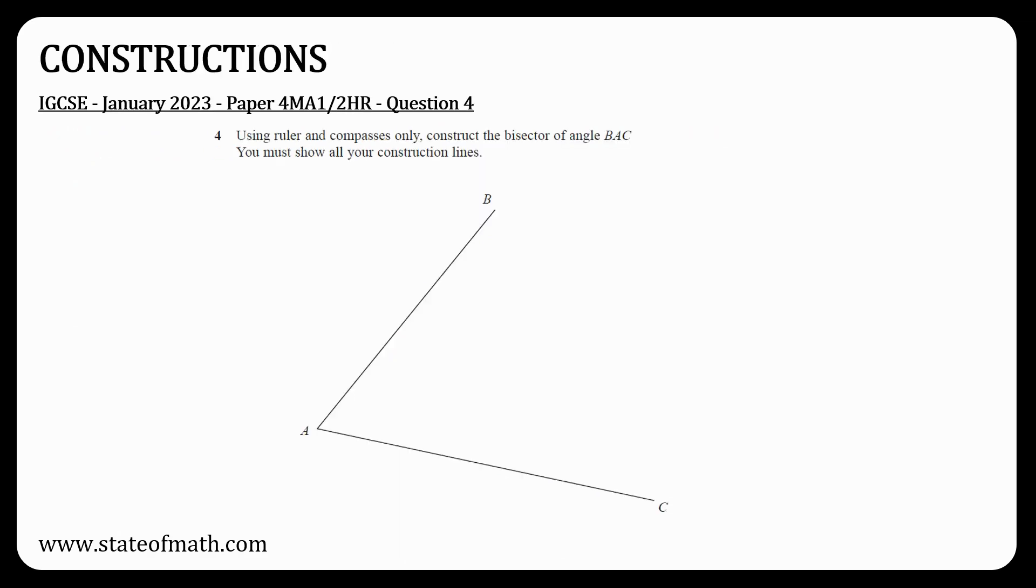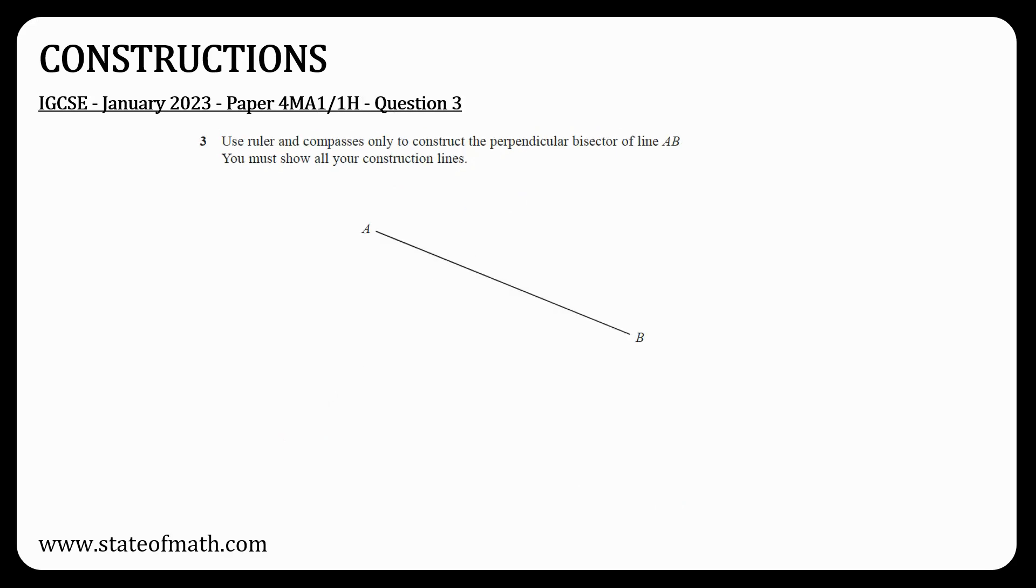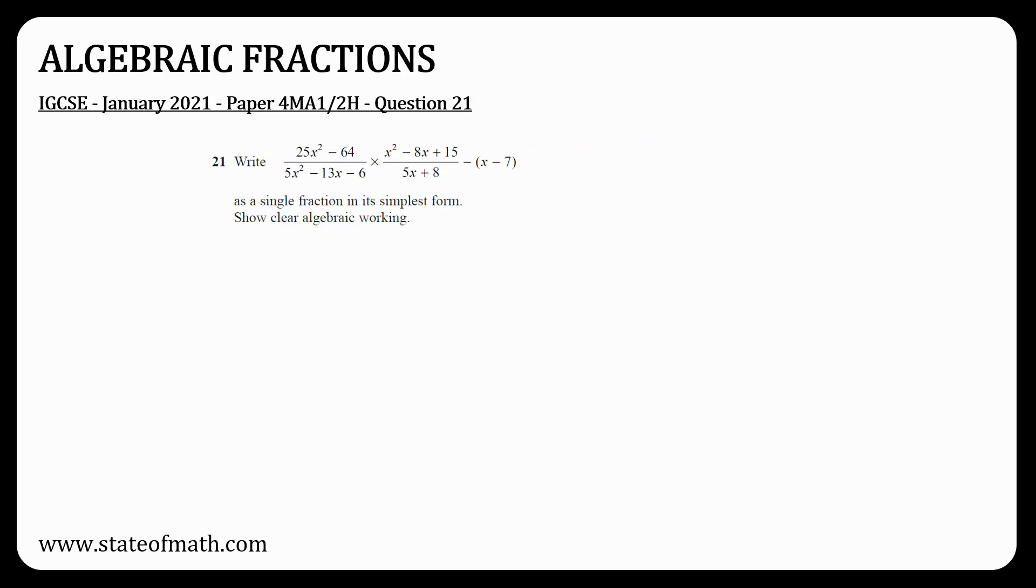Don't forget to take a ruler and a compass with you, since there was no question on constructions. There are two main constructions that appear in the past papers: either an angle bisector or a perpendicular bisector.